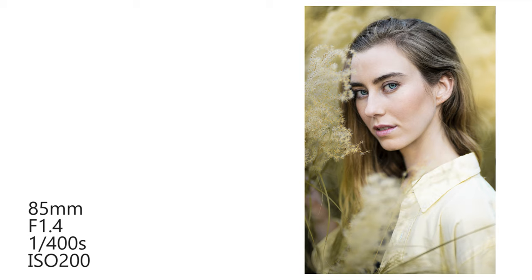I'm using a shutter speed of 1/400th of a second because the amount of light in the area we're shooting in allows that. It means I'm shooting at a nice fast shutter speed, not getting any motion blur from camera shake or from Natasha moving around. If it was a little bit more dim, I would have reduced my shutter speed to about 1/200th of a second, and if it was still too dark I would bump my ISO up until I had a nice exposure.